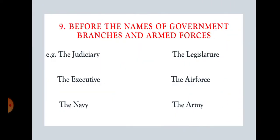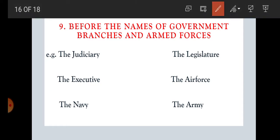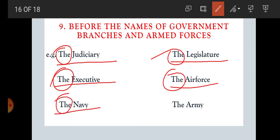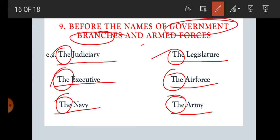Rule number nine: before the names of government branches and armed forces, we use 'the.' For example: the judiciary — it is a branch of government. The legislature — a branch of government. The executive — a branch of government. The air force — it is an armed force, so 'the.' The navy — armed force, so 'the.' The army — armed force. So if there is a name of a government branch or armed force, we put 'the' before the name.